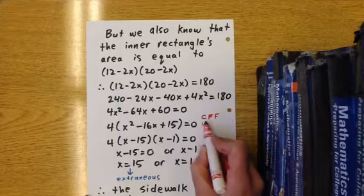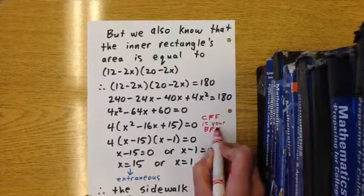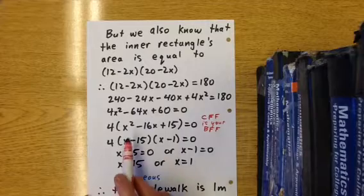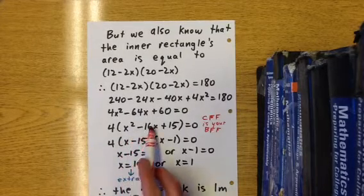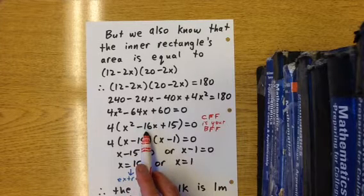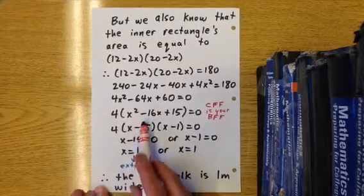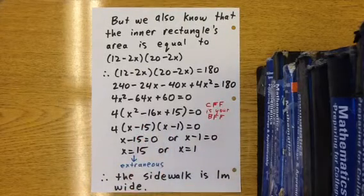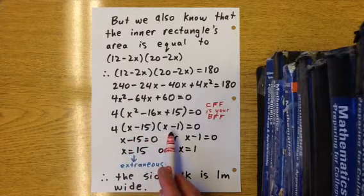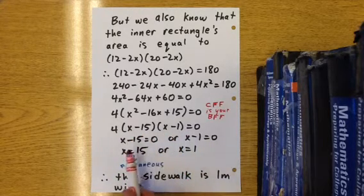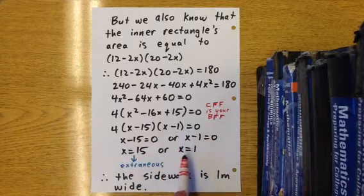When we do that, we have to come up with two numbers that add to negative 16 and multiply to positive 15. And those two numbers are negative 15 and negative 1. So we see that 4 times x minus 15 times x minus 1 equals zero. That means finding our zeros would mean that x equals 15 or x equals 1.